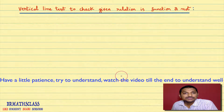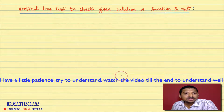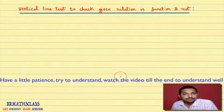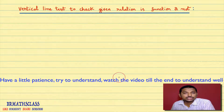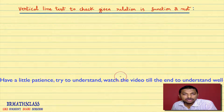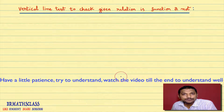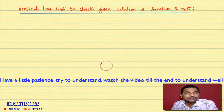In this class, we will learn how to check whether a given relation is a function or not using the vertical line test. In JEE Mains, shortcuts play a very important role. This is one such shortcut. I am going to discuss three examples in this class. Please watch this video till the end so that you can understand the vertical line test.